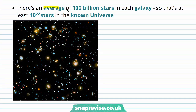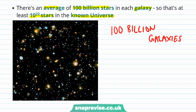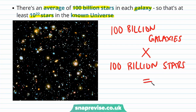There's an average of around 100 billion stars in each galaxy, which means there are at least 10 to the power of 22 stars in the known universe. So if we take 100 billion galaxies and multiply by 100 billion stars in each galaxy, we end up with 10 to the 22 stars — a really, really huge number.